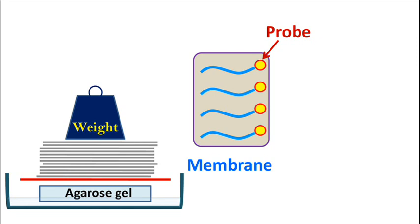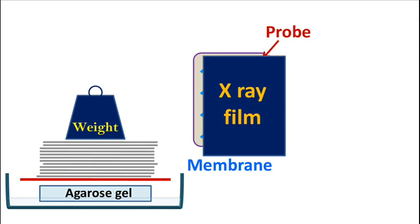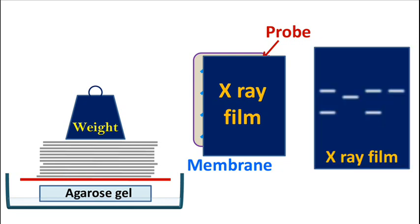After hybridization, excess probe is washed and an X-ray film is placed on the membrane to perform autoradiography. The autoradiography will show the presence or absence of the desired DNA fragment.